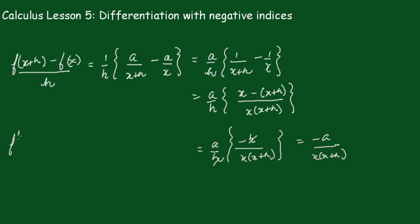Recall that f'(x) equals the limit as h goes to 0 of -a/[x(x+h)]. As h goes to 0, this becomes -a/(x times x), which is -a/x².